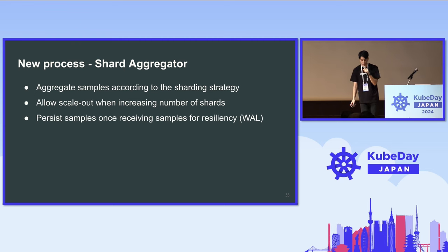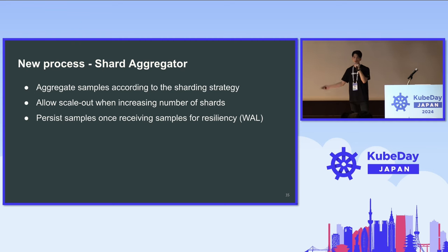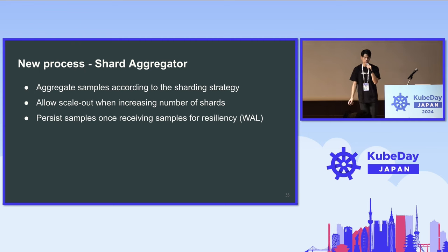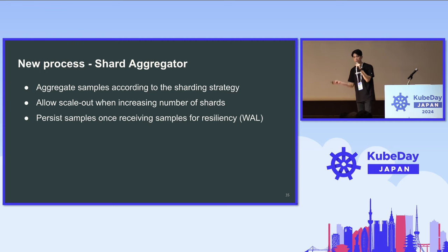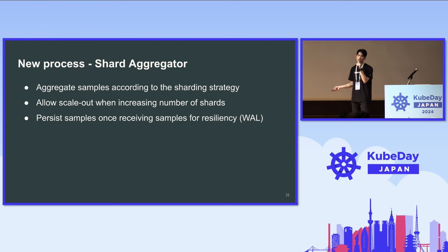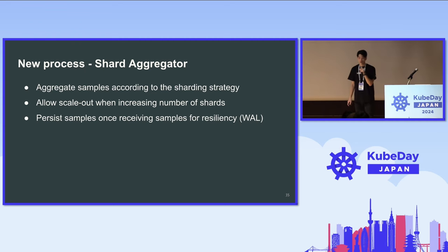To ensure scalability, when we increase the number of shards, we can also increase the number of pods accordingly. Data resiliency is really important: once the shard aggregator receives data from the batch server, it persists the data to local disk — like a write-ahead log — so it can recover data in case of pod failure when rebooting.